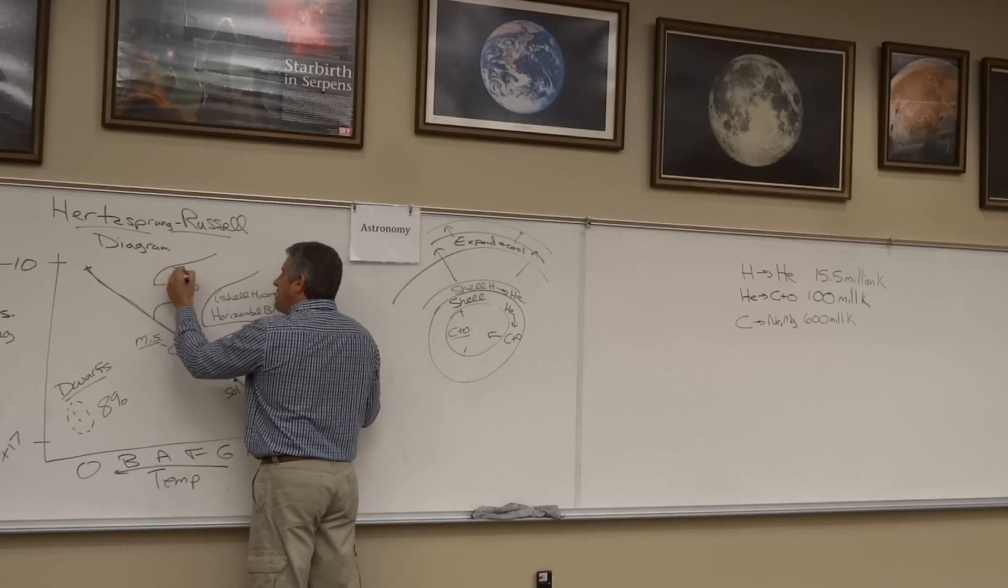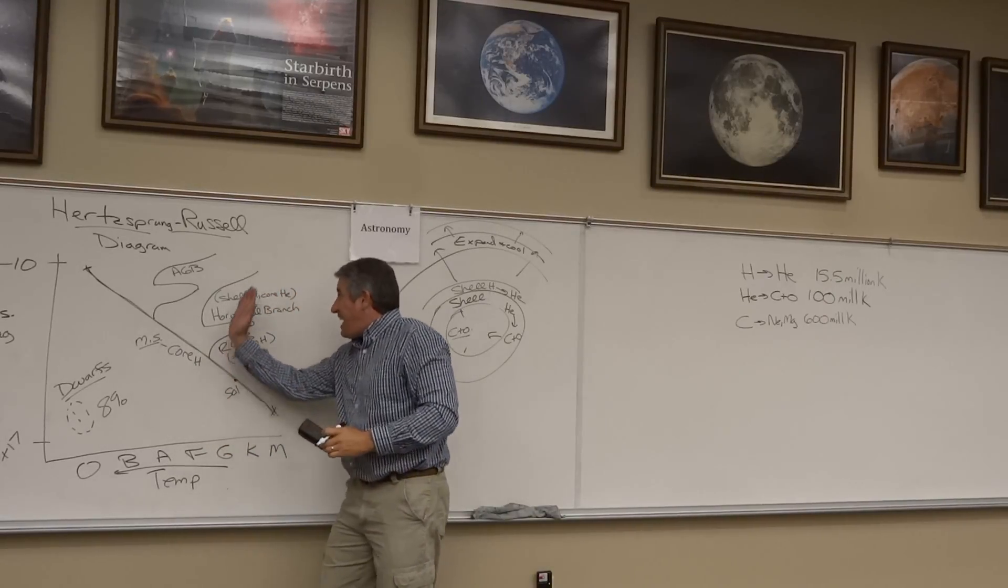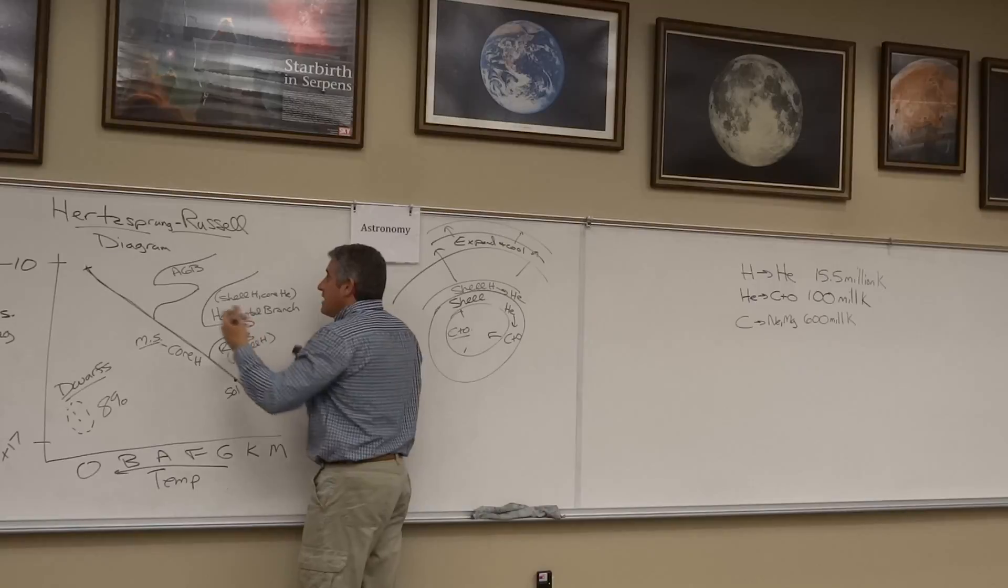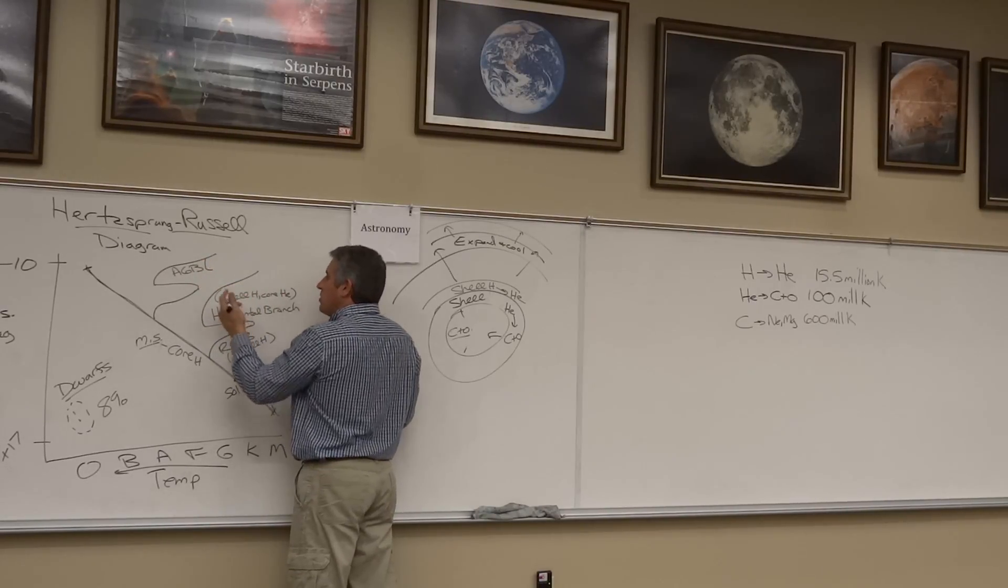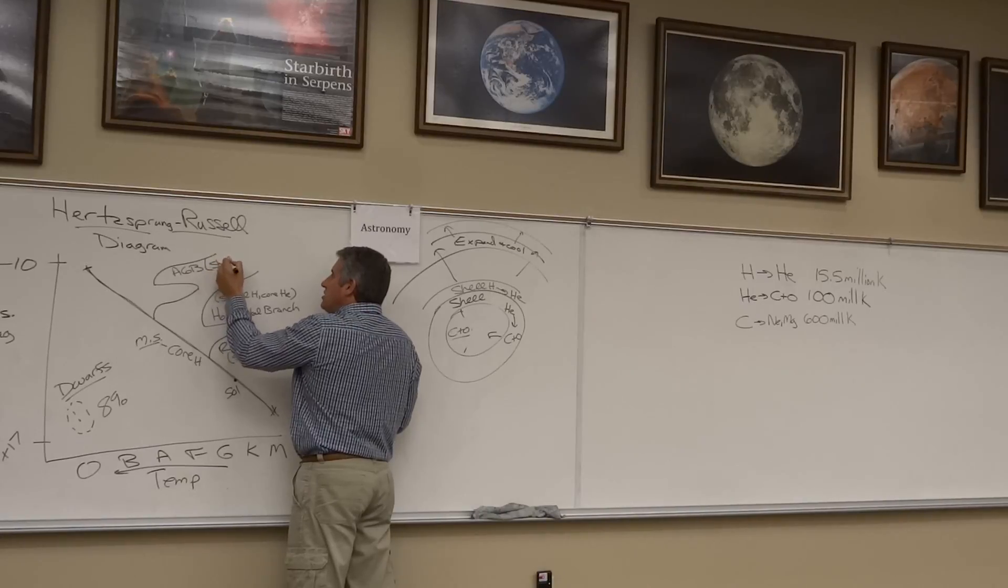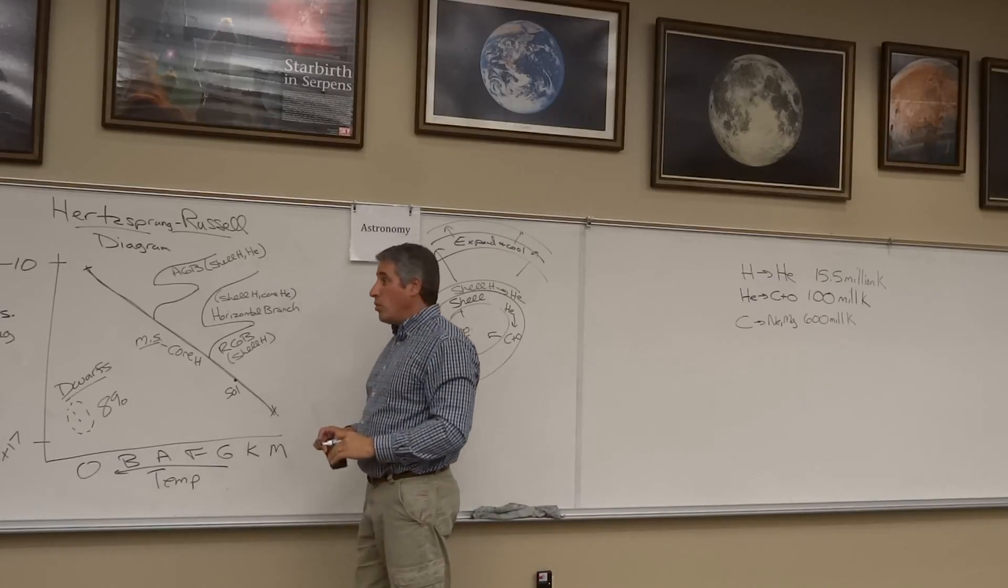We call this the AGB, the asymptotic giant branch, because this looks like an asymptotic line in mathematics. The asymptotic giant branch is powered by a shell of hydrogen and a shell of helium, but nothing in the core.